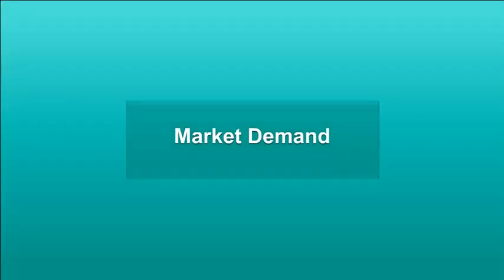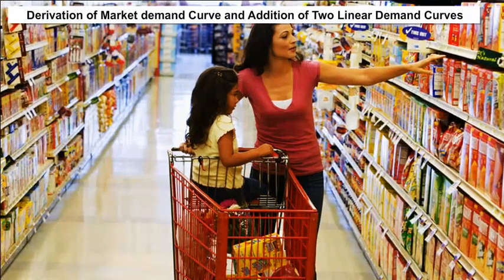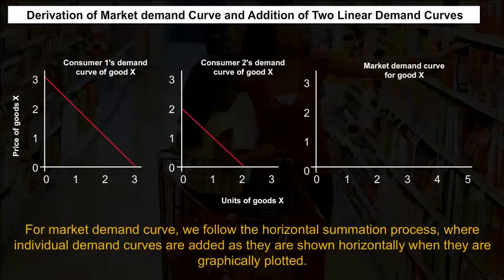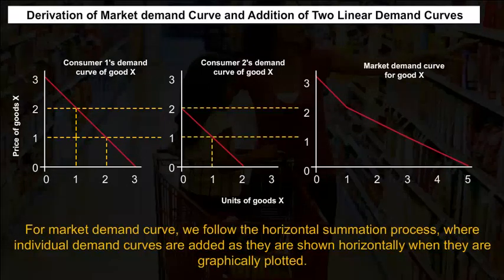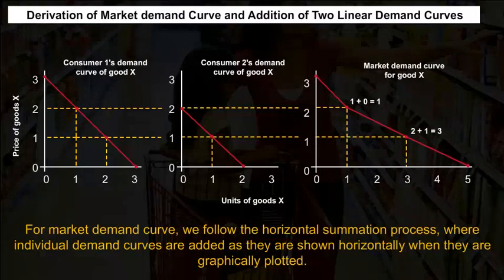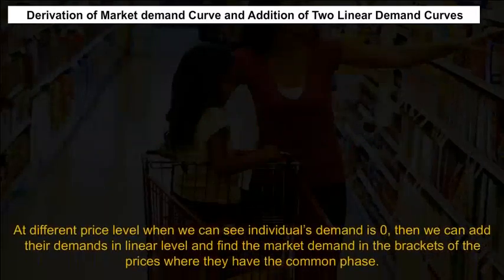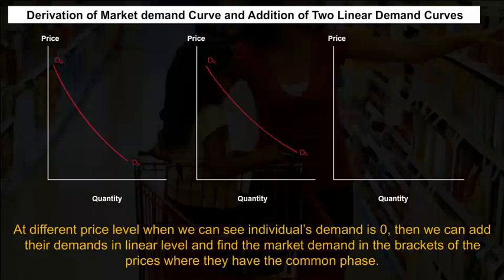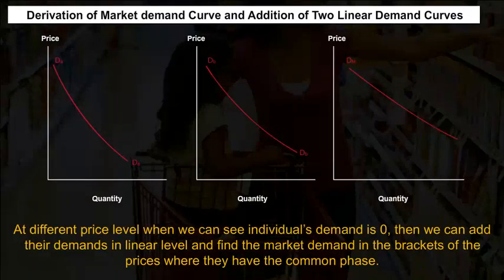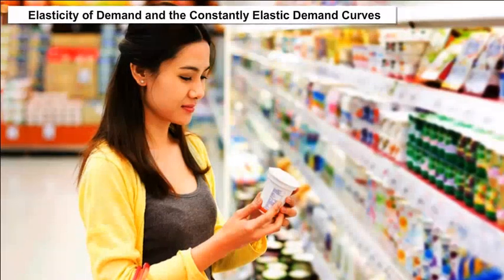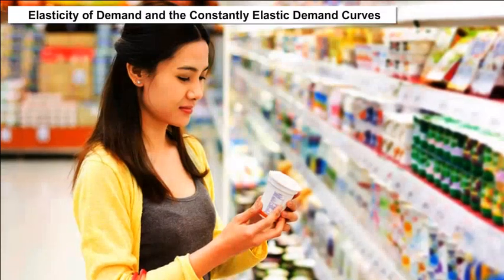Market demand curve — derivation and addition of linear demand curves: By adding individual demands, the market demand can be calculated. For the market demand curve, we follow the horizontal summation process, where individual demand curves are added horizontally when graphically plotted at different price levels. When individual demand is zero, we add their demands at linear level to find market demands within the price ranges where they have a common phase.